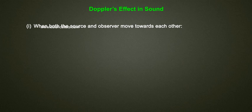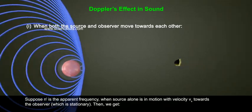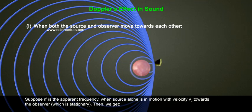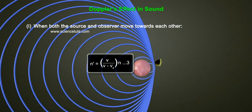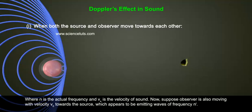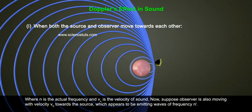When both the source and observer move towards each other: suppose n' is the apparent frequency when the source alone is in motion with velocity vs towards the stationary observer. Then we get n' = (v / (v - vs)) × n — Equation 3 — where n is the actual frequency and v is the velocity of sound.